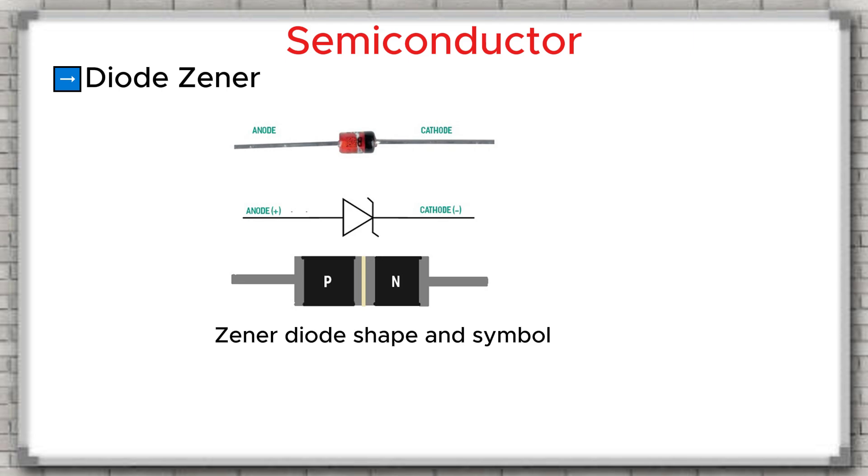Zener diode. The zener diode has a structure very similar to a normal diode. It is made of two semiconductor layers, type P and type N, joined together. In forward bias, the zener diode behaves just like a regular diode. But in reverse bias, something special happens. The zener diode will clamp the voltage at a fixed level. That level is exactly the value written on the diode itself.